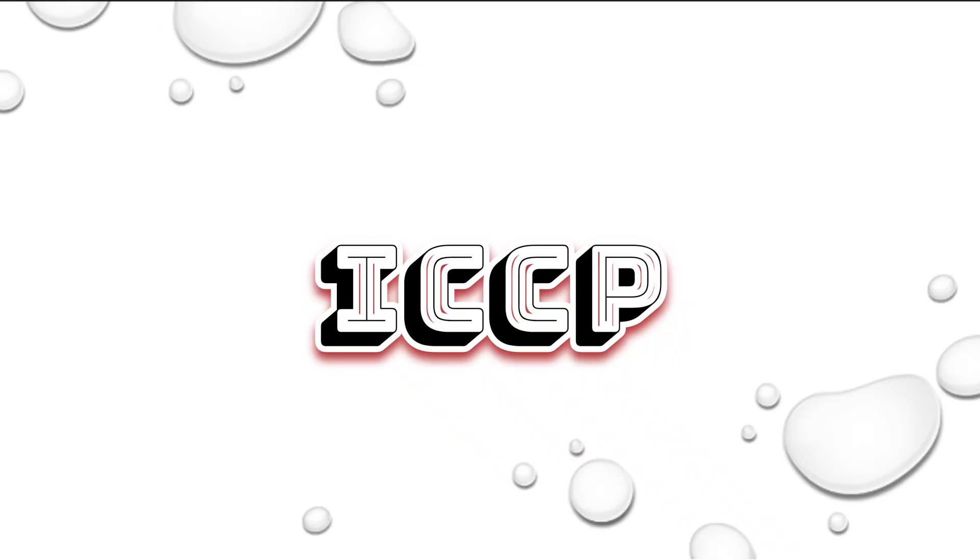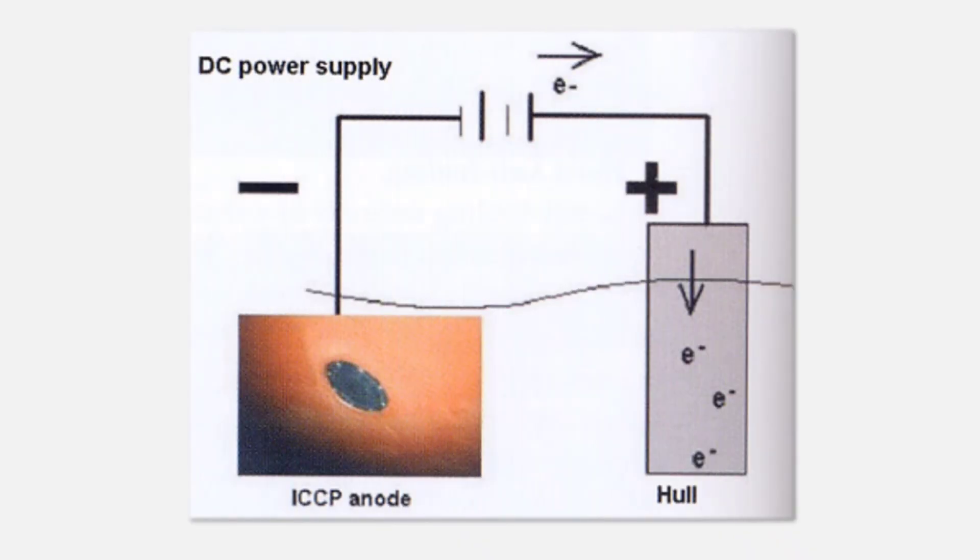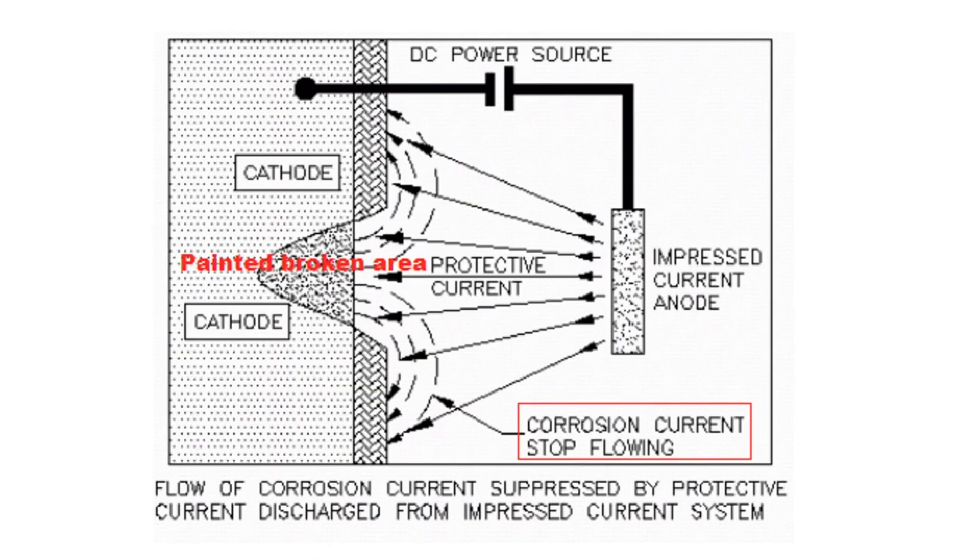Impressed Current Cathodic Protection (ICCP): Impressed current cathodic protection systems are the technologically advanced and long-term solution to corrosion problems and is regarded as a superior alternative to sacrificial anode systems. In the ICCP, the metal to be protected is connected to an insoluble anode and current is passed using a DC source opposite to the corrosion current, so that the corroding metal gets converted from anode to cathode and is protected from corrosion.